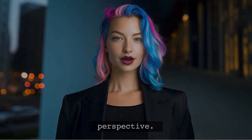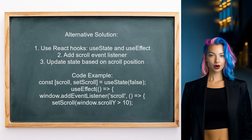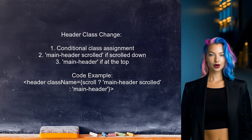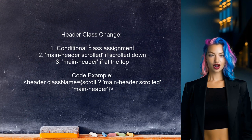Another solution also uses React hooks — specifically useState and useEffect — to manage scroll state. The useEffect hook adds an event listener for the scroll event, updating the scroll state based on the vertical scroll position. In the return statement, the header class changes based on scroll state: if the user has scrolled down more than 10 pixels, the class 'scrolled' is added to the header.